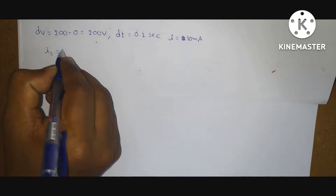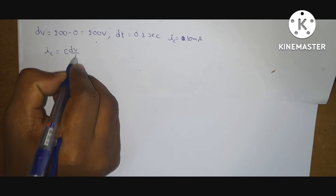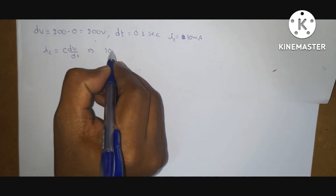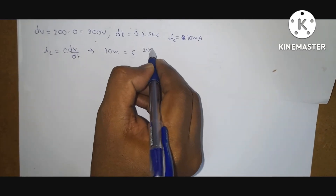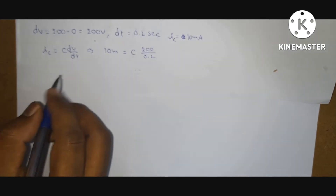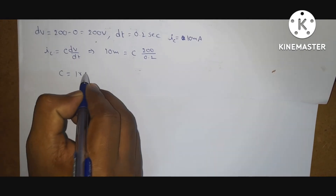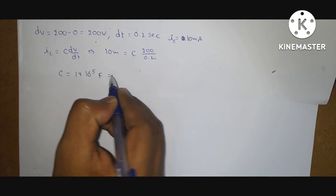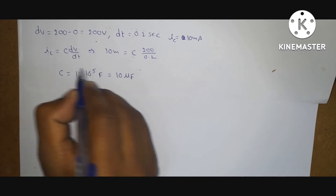So what is the current flowing through the capacitor? Ic is equal to C·dV by dt. From this: 10 milliamps is equal to C into 200 by 0.2. If you solve this value, you will get C is equal to 1 into 10 power minus 5 Farads, or 10 microfarad.